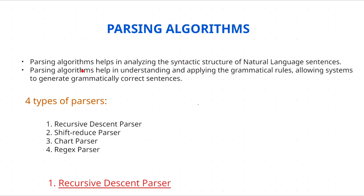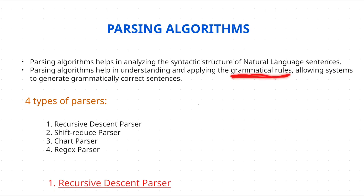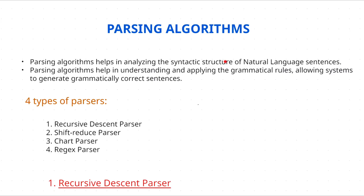The grammatical rules we apply are nothing but production rules — also known as CFG rules. I discussed some of these production rules when covering phrase structure graphs. We apply those rules to sentences in order to check whether they are grammatically correct. There are four types of parsers.